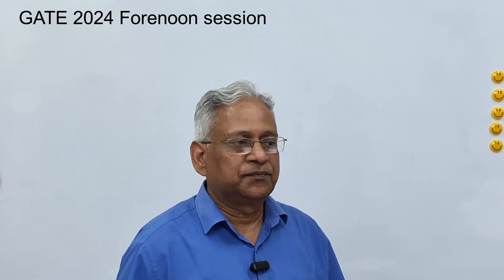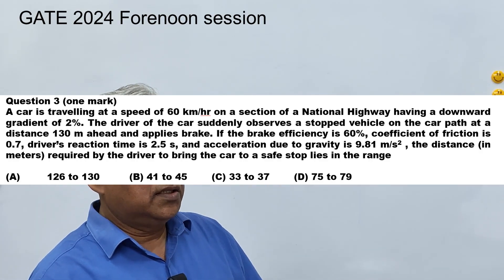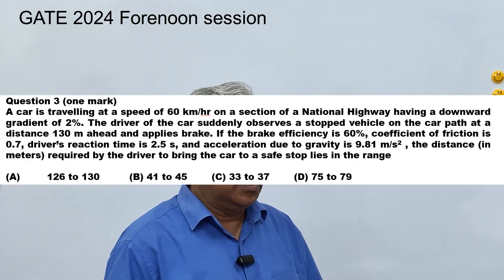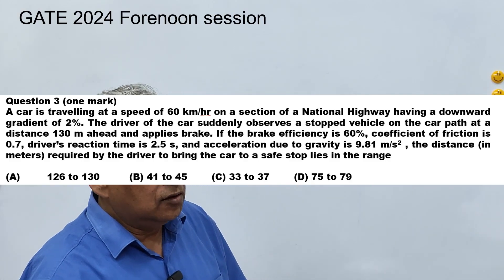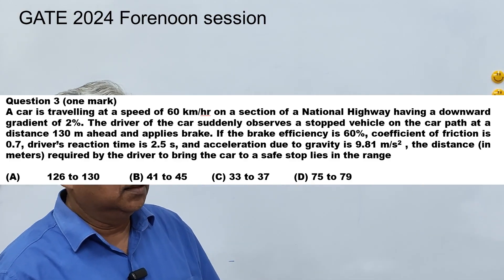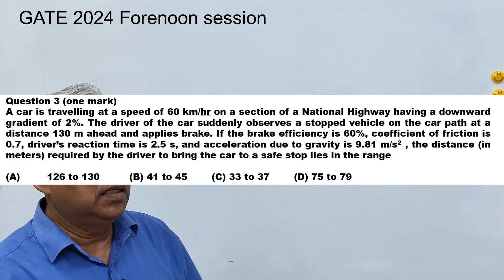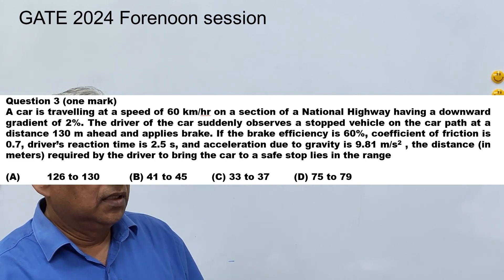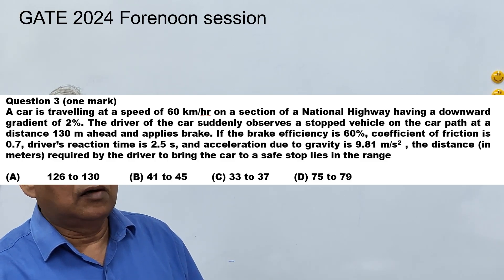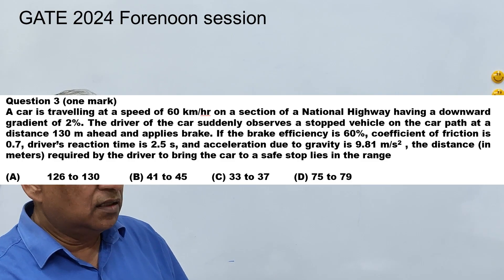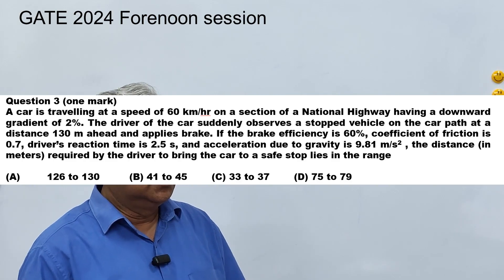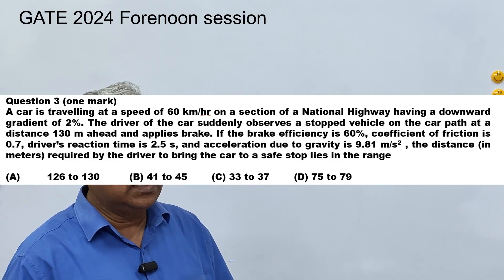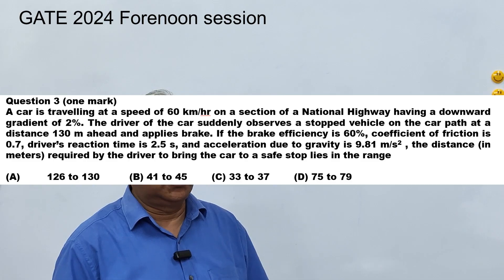Question number three is a numerical question. A car is travelling at a speed of 60 km/h on a section of highway having a downward gradient of 2 percent. The driver suddenly observes a stopped vehicle at a distance of 130 meters ahead and applies the brake. Brake efficiency is 60 percent, coefficient of friction is 0.7, reaction time of driver is 2.5 seconds, and g = 9.81. The distance required to bring the car to a safe stop is to be determined.